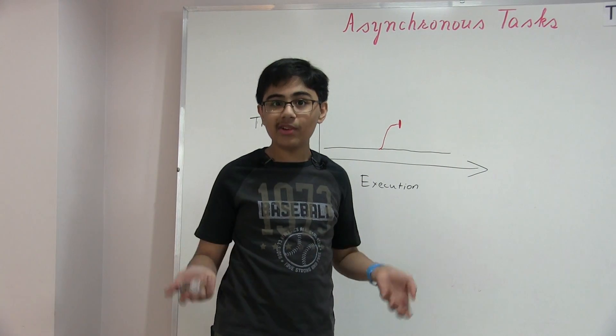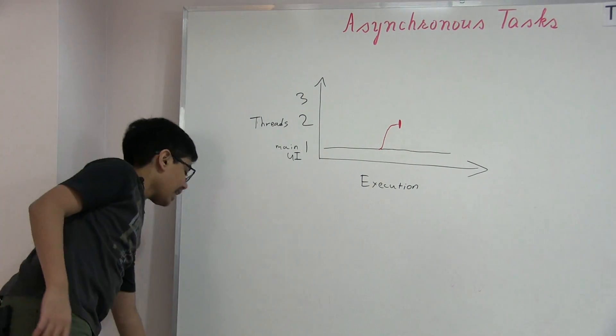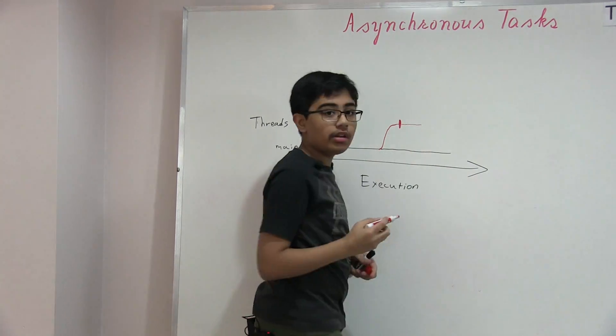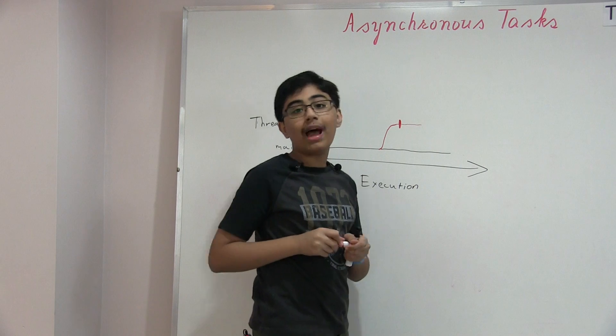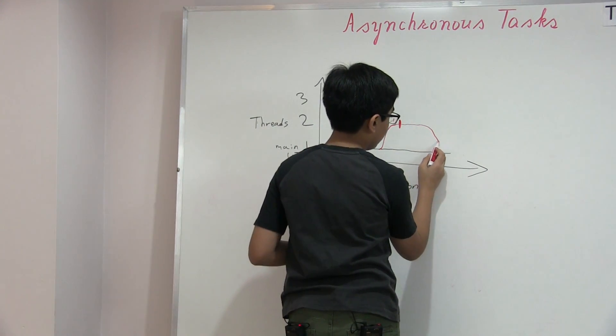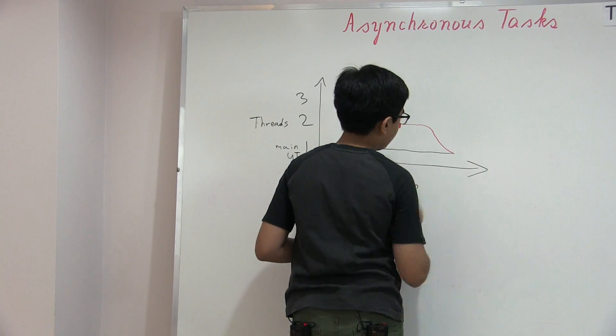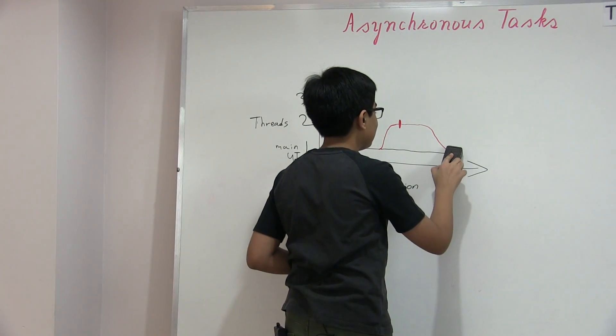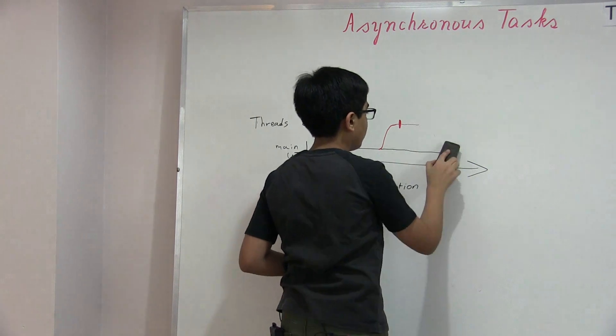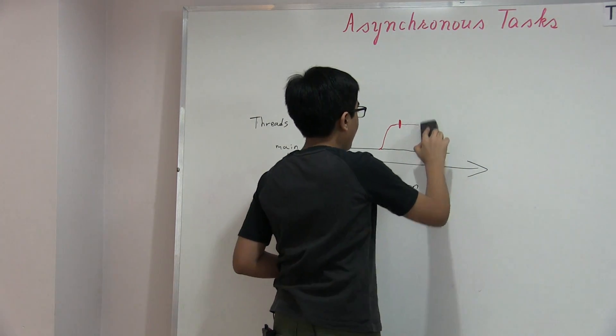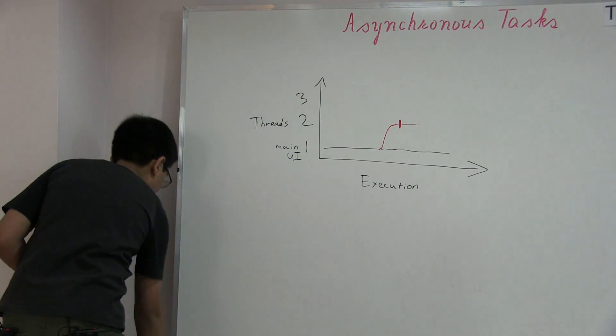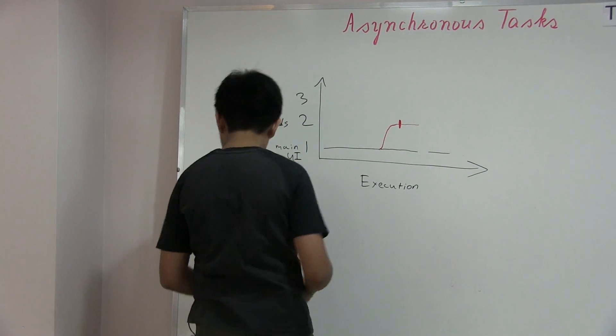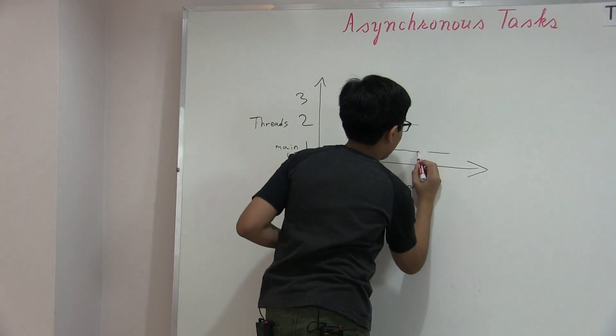The point here is we've got this execution, we've got this UI nicely going, and then somewhere we need to run a long-running operation, let's say a call to Watson. What we're going to do is branch off from this thread onto thread number two. We're going to put our long-running operation and block this thread. However, thread number one can keep going without any interruptions.